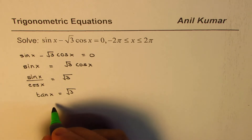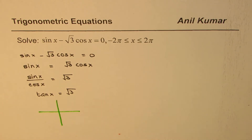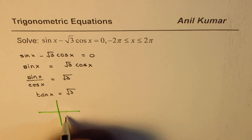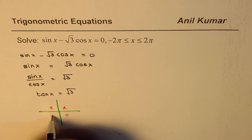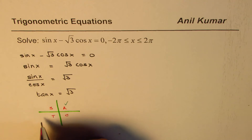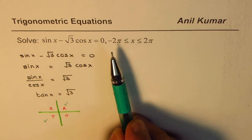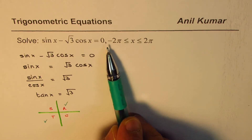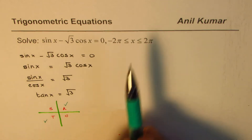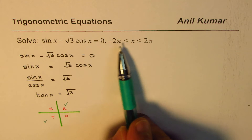Now tan x equals square root 3 — in which quadrants do we look for solutions? Using your rules: tan is positive in quadrant 1 and in quadrant 3. So we're looking for two solutions in 0 to 2π. But the domain is minus 2π to 2π, so we're looking for four solutions.